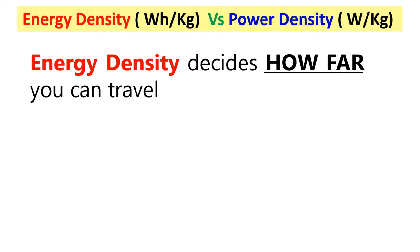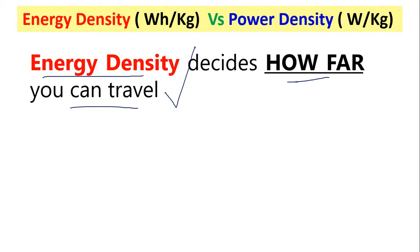Energy density — meaning the battery — decides how far you can travel. If you are talking about a runner, and the runner runs for a thousand meters, you need a battery because the battery has higher energy density.